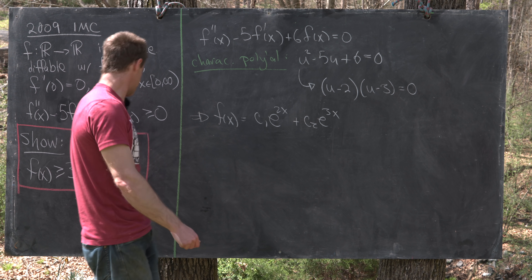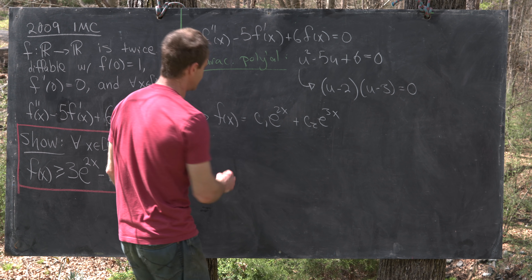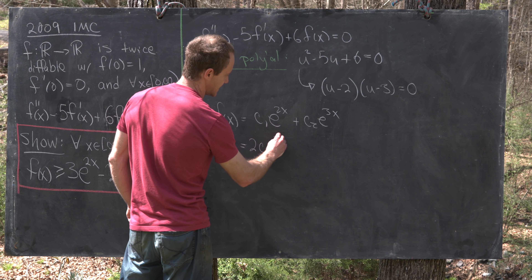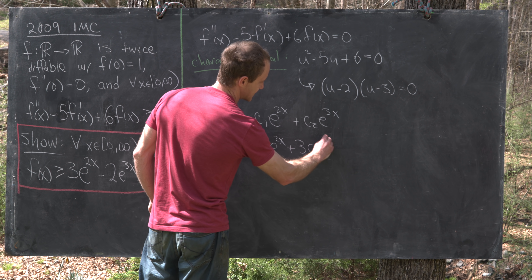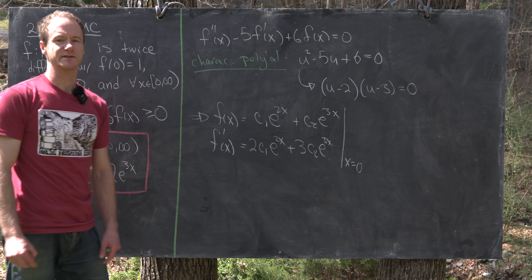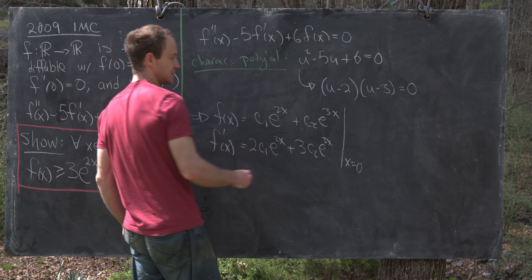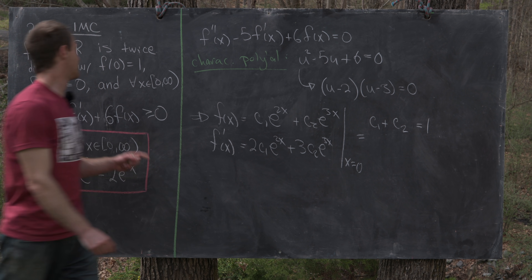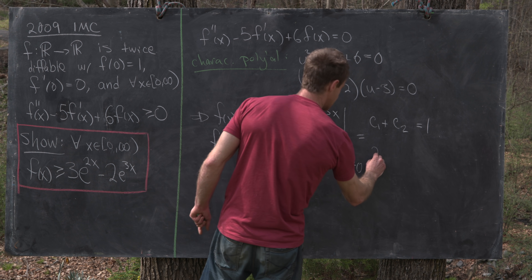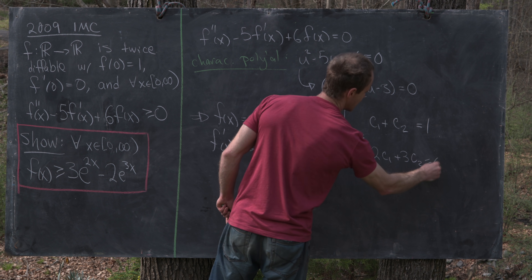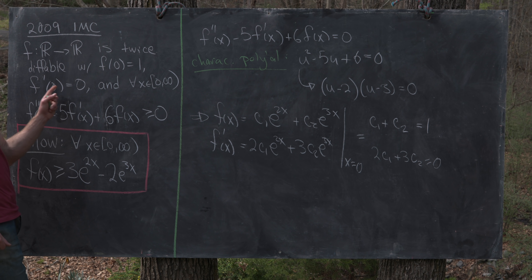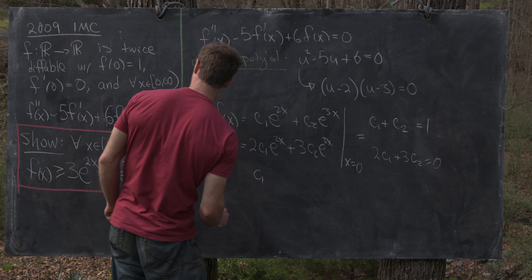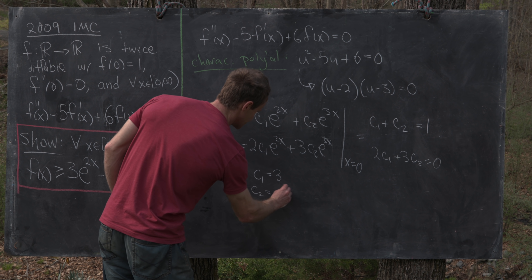Now we apply the initial conditions. We have f(x) = c₁e^{2x} + c₂e^{3x}, and f'(x) = 2c₁e^{2x} + 3c₂e^{3x}. Evaluating at x = 0 gives c₁ + c₂ = 1 from the first condition, and 2c₁ + 3c₂ = 0 from the second. Solving this system gives c₁ = 3 and c₂ = −2.